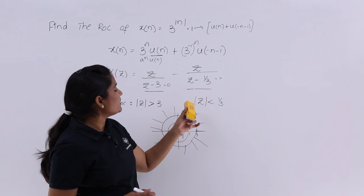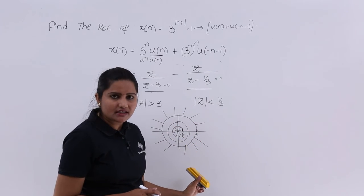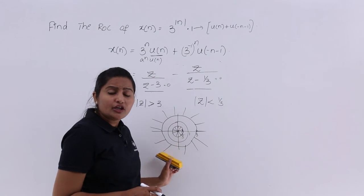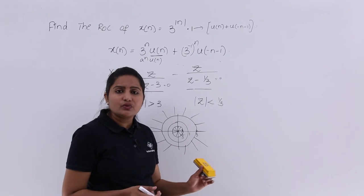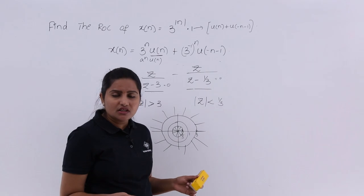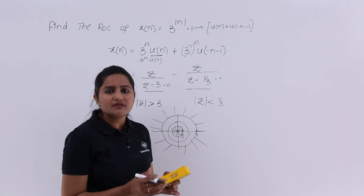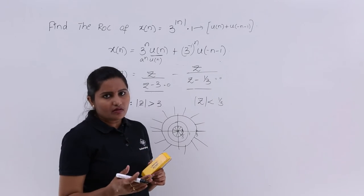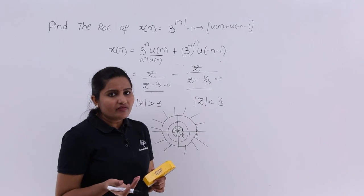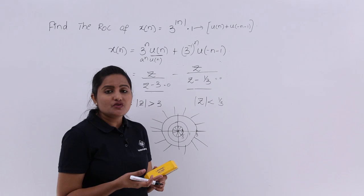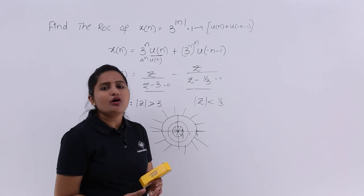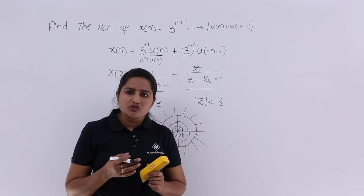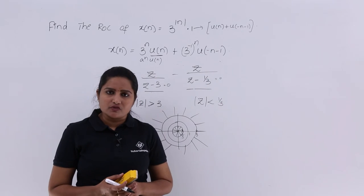When you find the ROC of x(n), you need to mention it like this: if it is a conventional type exam, you need to write a statement — there is no common ROC, so we cannot specify the ROC for this signal. In objective type exams, they will give you the option 'there is no common ROC' and you need to opt for that answer. This is how you solve problems related to ROC.